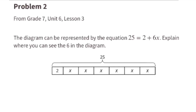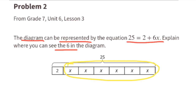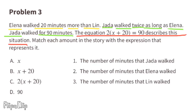Problem number two, from seventh grade Unit 6, Lesson 3: the diagram can be represented by the equation 25 equals 2 plus 6x. Explain where you can see the six in the diagram. I see six right here in the six x's that are added to the two to equal 25. These six x's represent six equal parts of x.